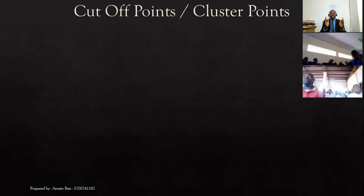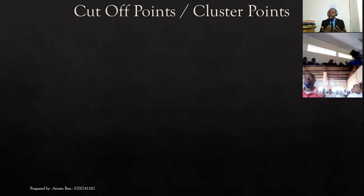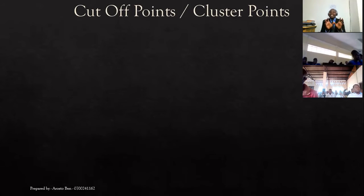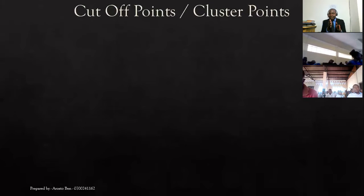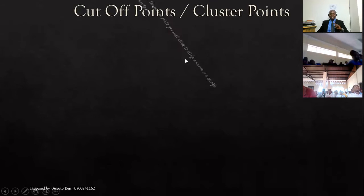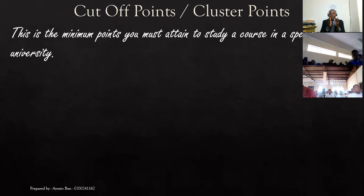For example, if you want to go and take law, you require at least a B plain in English or Swahili, a B plain in history, and a B plain in CRE. These are cluster subjects — they are mandatory for you to take that course in the university. Now, other than cluster subjects, we have what we refer to as cluster points or cut-off points. These are the minimum points that you must attain for you to take that course in a specific university.